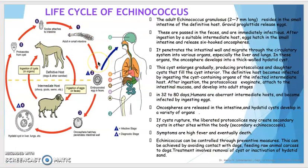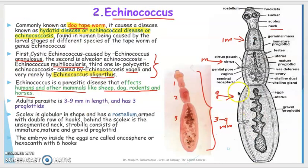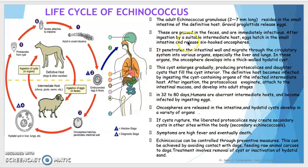This picture represents the life cycle of Echinococcus. The adult Echinococcus is 2 to 7 millimeters long and resides in the small intestine of the definitive host. The gravid proglottid releases eggs, which are passed along with fecal matter. After ingestion by a suitable intermediate host, the egg hatches in the small intestine and releases a six-hooked oncosphere.